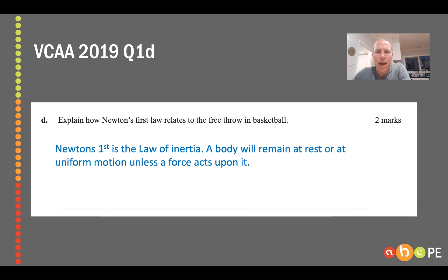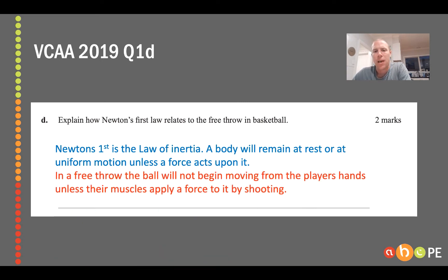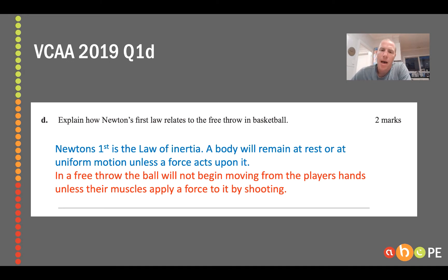Hopefully you've worked out that Newton's first law is the law of inertia. With these biomechanics questions, you often want to start with the definition. Newton's first law is: a body will remain at rest or in uniform motion unless a force acts upon it. In basketball, just like when Layla was about to hit those balls, the ball is not going to move until a player applies an external force — which in a human's case is their muscles — to shoot it towards the ring. It really is rather simple, so don't over-complicate these biomechanics questions.